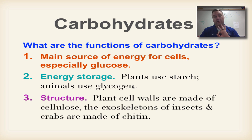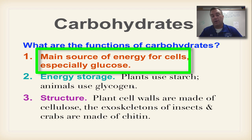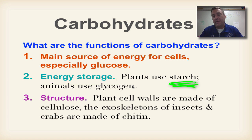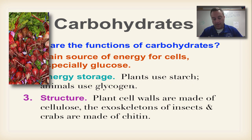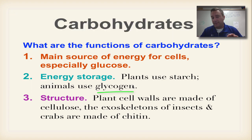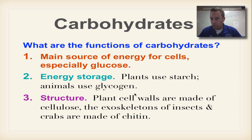The functions of carbohydrates — there are three of them. First, the main source of energy for cells is carbohydrates, so the number one function is as a primary source of energy. Second, carbohydrates can be used for energy storage, mainly in plants. Plants use starch for energy storage rather than fat. Think of root vegetables — beets, potatoes, carrots — which all have a lot of starch. In animals, we store a little energy in the form of glycogen, also known as animal starch, mainly in the liver. But most animals store energy in the form of a lipid called fat.